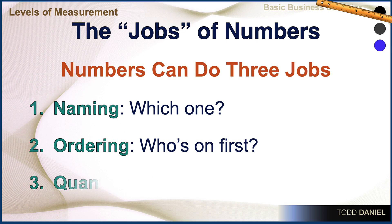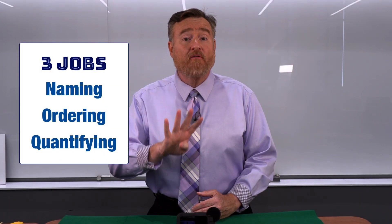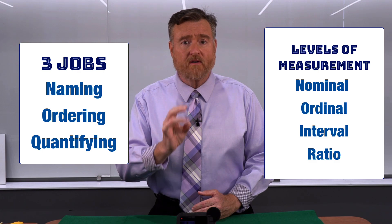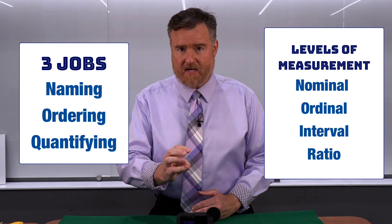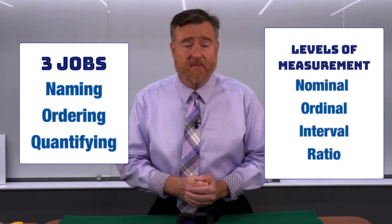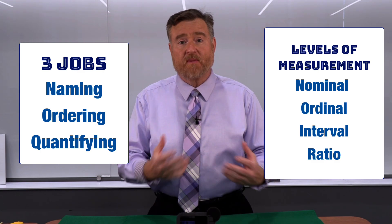And numbers can quantify or count — how many siblings do you have, how much does it cost for a coffee at the student union? I said that there are three jobs, but there are four levels of measurement: nominal, ordinal, interval, and ratio. So let's sort out those levels of measurement to determine which job each level of measurement is doing.